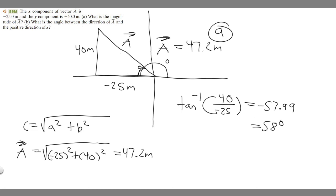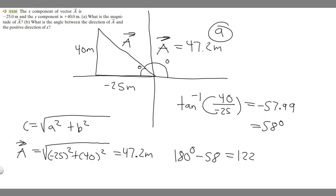So this interior angle is 58 degrees, and we're trying to find the angle from the positive x-axis. Since a straight line has angles that add up to 180 degrees, we can find it by subtracting: 180 minus 58 equals 122 degrees. So the answer to part b is 122 degrees.